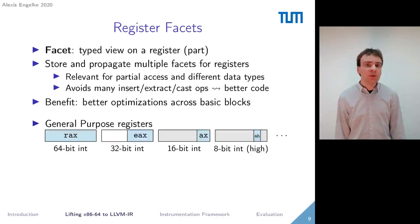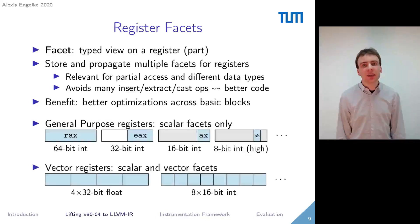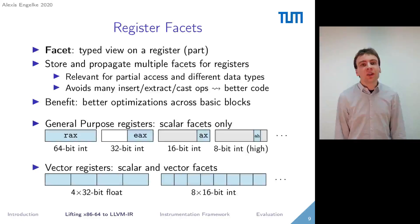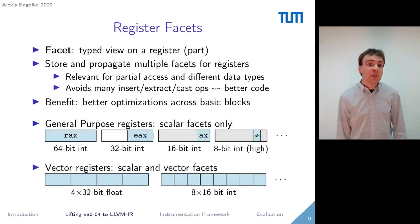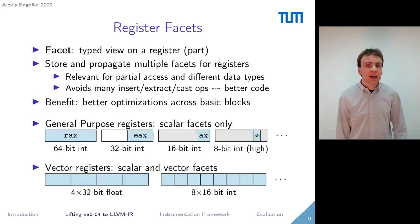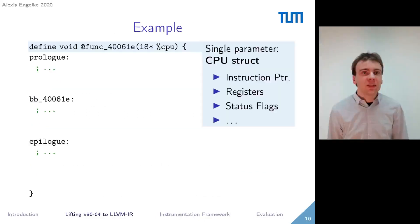For general purpose registers, we only have scalar integer facets. However, we also have vector registers where not only the size of the register differs but also the type. For example, a 128-bit register may be interpreted as a 4×32-bit float vector or an 8×16-bit integer vector. With the use of facets, we eliminate frequent casts between these types.